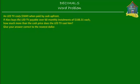There are a few things given: the cost of the LED TV is $5,849 if paid by cash upfront. And if you choose to pay by monthly installments, then there are 60 monthly installments, each $108.31. What we have to find out is if Alex chose to pay by 60 monthly installments, then how much more than the cash price did he have to pay for the LED TV? And we have to give the answer correct to the nearest dollar.